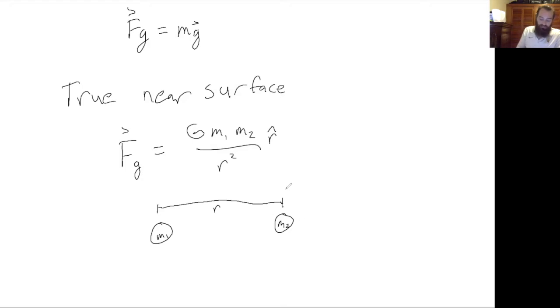Depending on which mass we're looking at, for example, mass 2 is going to feel a force in this direction, so r hat points that way. And mass 1 feels a force pointing to the right, so r hat points in that direction.